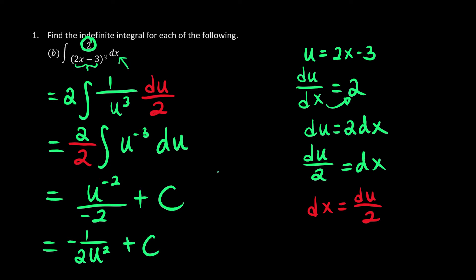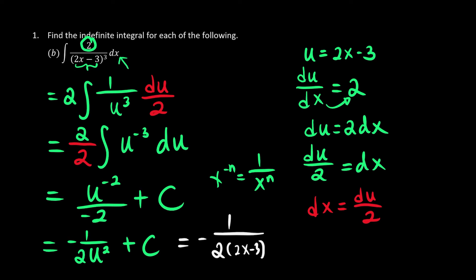If you have x to the power of negative n, it means it's located at the denominator — 1 over x to the power of n. This is just indices. But don't forget: your final answer is going to change back to x. So it becomes negative 1 over 2, where u is just 2x minus 3, giving us negative 1 over 2 times (2x minus 3) to the power of 2 plus c, and we are done.